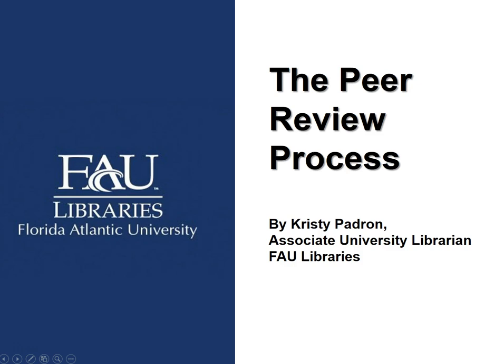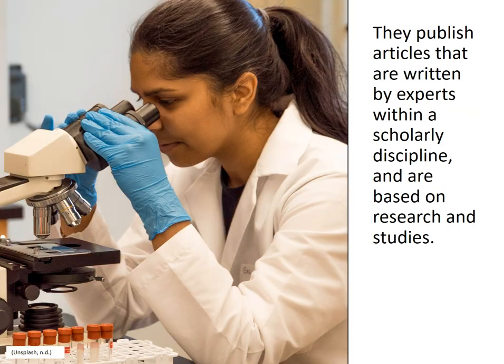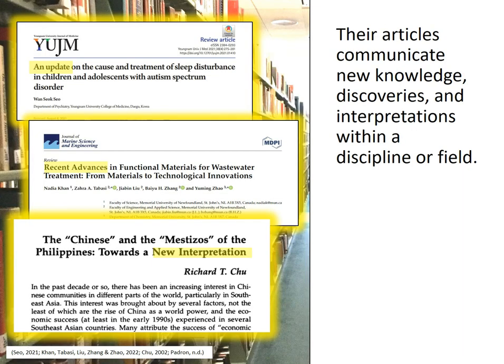An academic or scholarly journal focuses on knowledge within a specialized field, such as psychology, mathematics, political science, and other subjects. They publish articles that are written by experts within a scholarly discipline and are based on research and studies. Their articles communicate new knowledge, discoveries, and interpretations within a discipline or field.